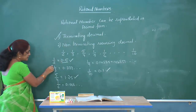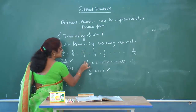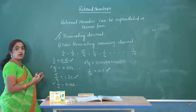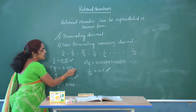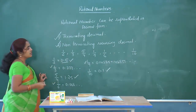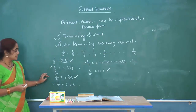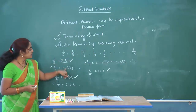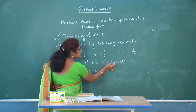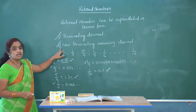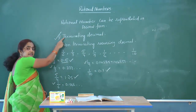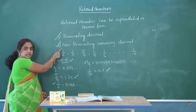But for 1/3, 1/6, and 1/7, the division process never ends — we never get a remainder of 0, the number keeps repeating and does not terminate. Those types of decimals are called non-terminating recurring decimals: non-terminating because the division doesn't end, and recurring because the digits repeat. Here 3 repeats in 1/3, 6 repeats in 1/6, and 142857 repeats in 1/7. Every rational number can be represented as either a terminating decimal or a non-terminating recurring decimal.